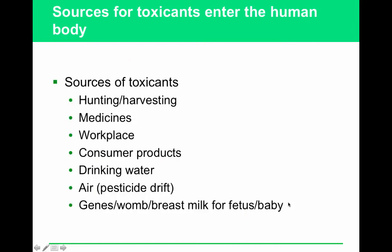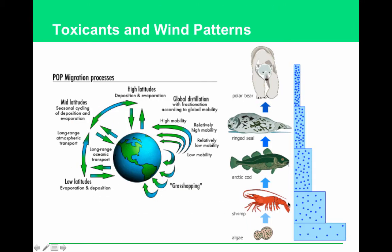Additional entry routes include genetics, transmission through the womb — since not everything is blocked by the placenta — and breast milk, particularly for fetuses and babies. Global wind patterns push airborne toxicants toward the polar regions.